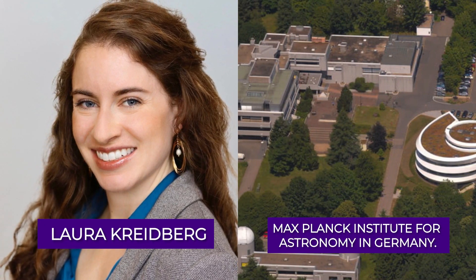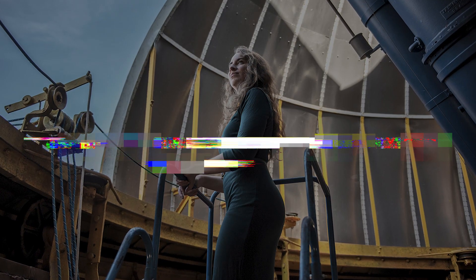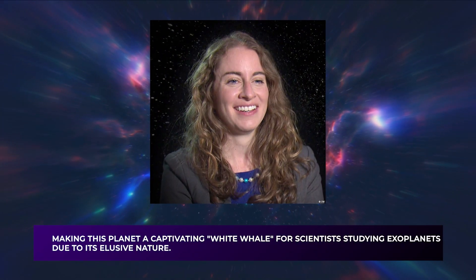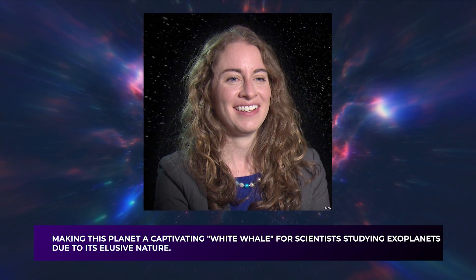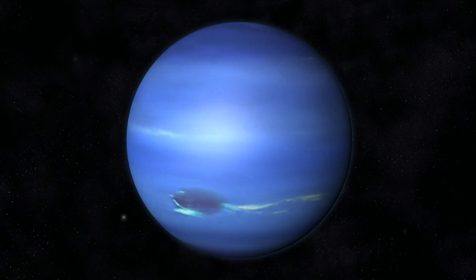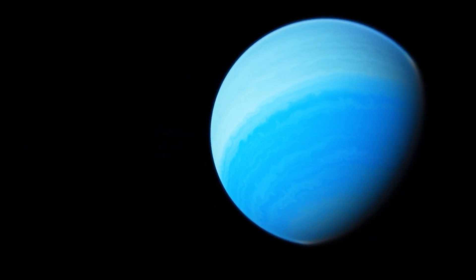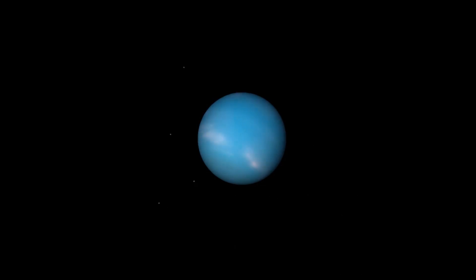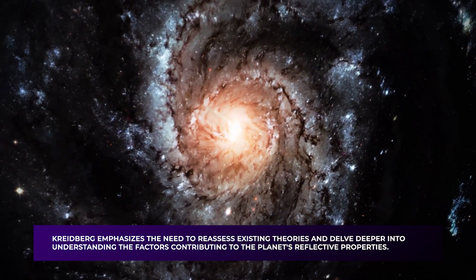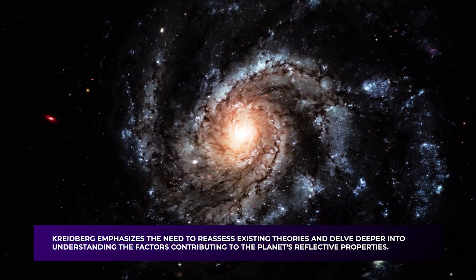The latest discoveries have captivated renowned planet researcher Laura Kreideberg from the Max Planck Institute for Astronomy in Germany. While not directly involved in this research, Kreideberg has previously used the Hubble Space Telescope to study GJ-1214b, making this planet a captivating white whale for scientists studying exoplanets due to its elusive nature. The newfound insights into GJ-1214b's enigmatic atmosphere have astounded Kreideberg. The unexpected shininess of the planet's atmosphere was a revelation that had not been anticipated, broadening the horizons of scientific understanding and presenting a fresh puzzle to solve. As the scientific community grapples with these surprising findings, Kreideberg emphasizes the need to reassess existing theories and delve deeper into understanding the factors contributing to the planet's reflective properties.